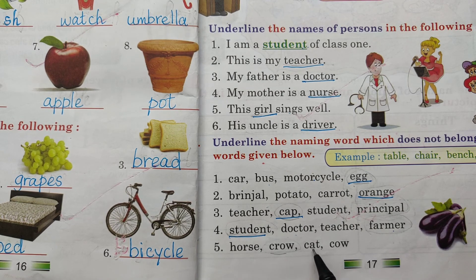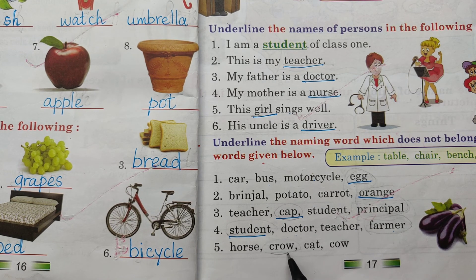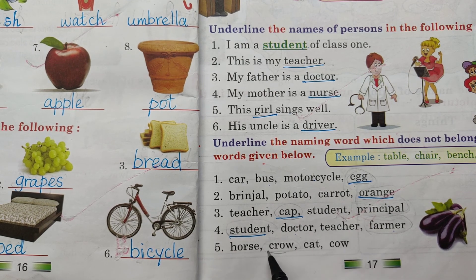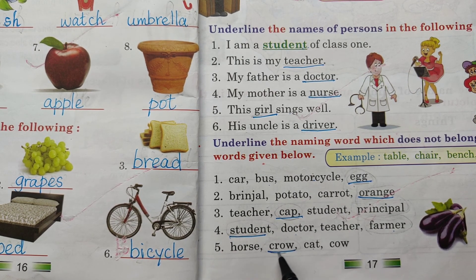Horse, Crow, Cat, Cow - these are animals. Crow does not belong to this group.